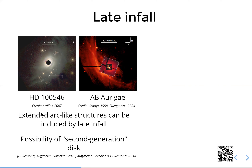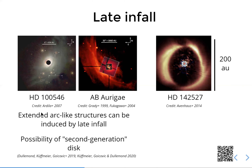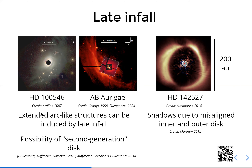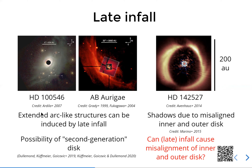Moreover, we found that this can also lead to the formation of even a second-generation disk. That's very interesting, also potentially in the context of systems where you have shadows — caused by an inner disk that casts a shadow on the outer disk. The question for us was: there have been some models of how to cause this misalignment based on the existing disk, but what happens if you just have late infall that forms a second-generation disk through an encounter with an existing star-disk system?